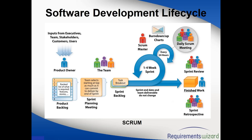The BA works with the product owner on a continuous basis to groom the product backlog — but not 100% of the time. For example, maybe once a week is spent with the product owner grooming the backlog, and the remaining four days are spent helping the sprint team. The requirements gathered in backlog grooming sessions may be raw — analysis still needs to be done and requirements documented in a proper format.